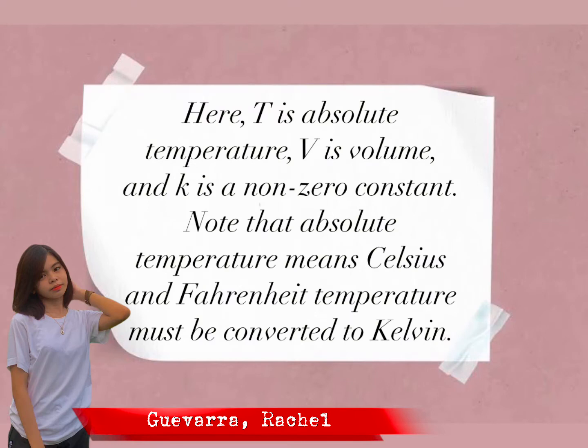Here, T is absolute temperature, V is volume, and K is a non-zero constant. Note that absolute temperature means Celsius and Fahrenheit temperatures must be converted to Kelvin.